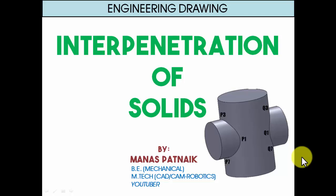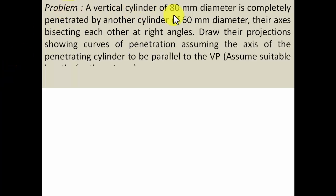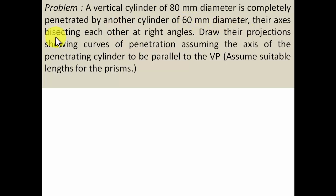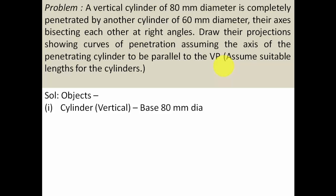The problem goes like this: a vertical cylinder of 80 mm diameter is completely penetrated by another cylinder of 60 mm diameter, their axes bisecting each other at right angles. Draw their projections showing curves of penetration, assuming the axis of the penetrating cylinder to be parallel to the VP. Assume suitable lengths for the cylinders.